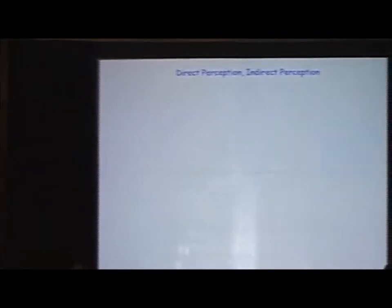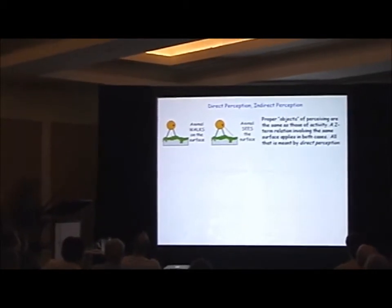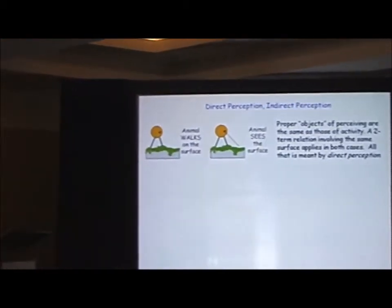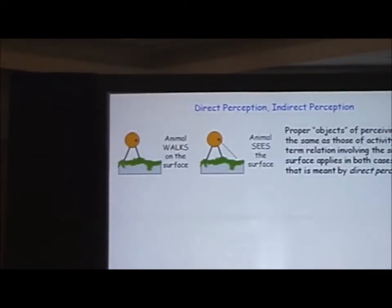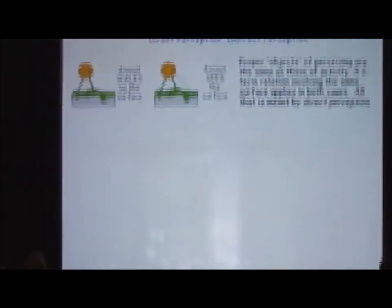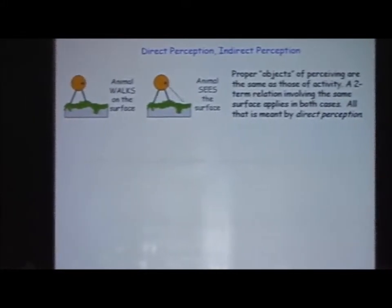So the topic is direct perception. It is a key notion in the theory of perception advanced by James Gibson, and it is an elusive notion. In many respects, it is a terribly simple idea. It is the claim that the proper objects of perception are exactly the same as those of activism. It is an unbelievably simple claim.